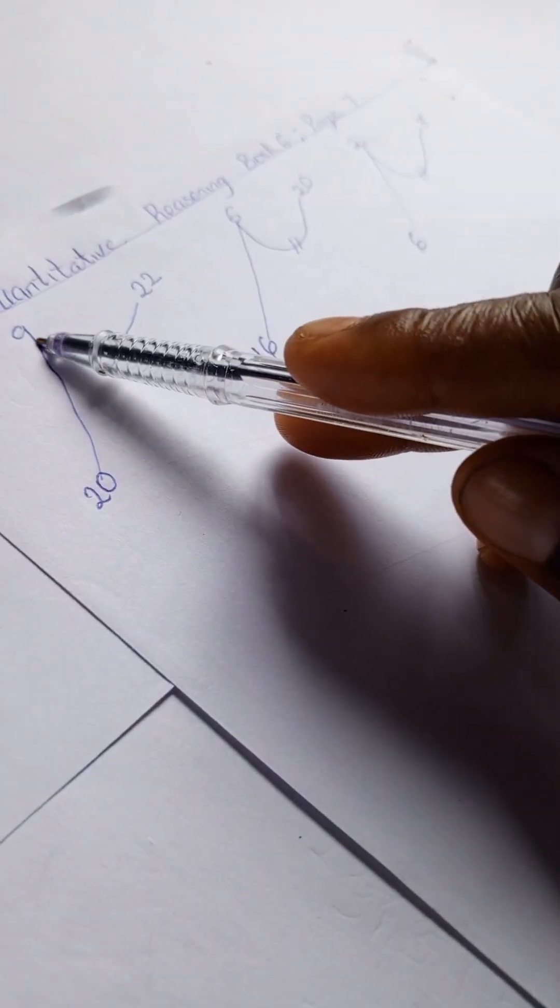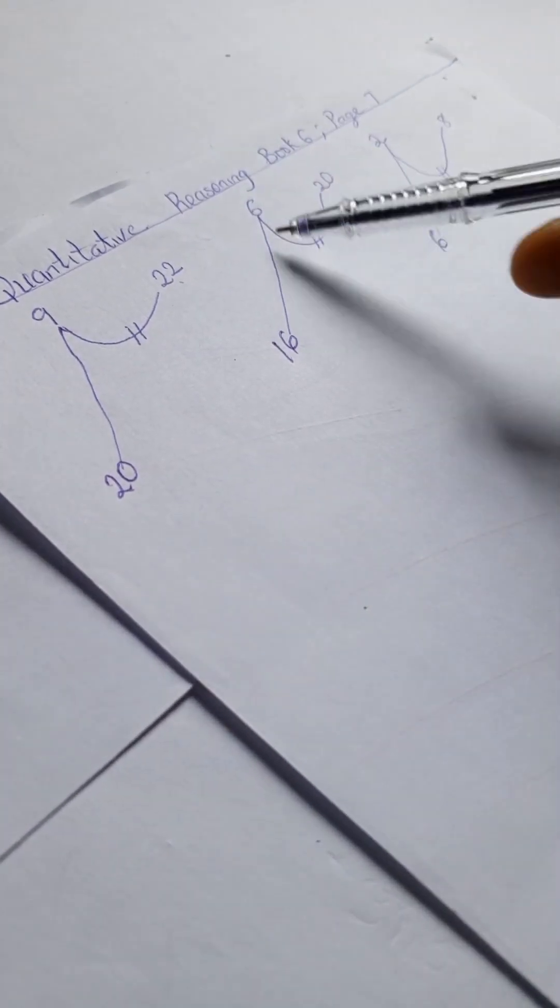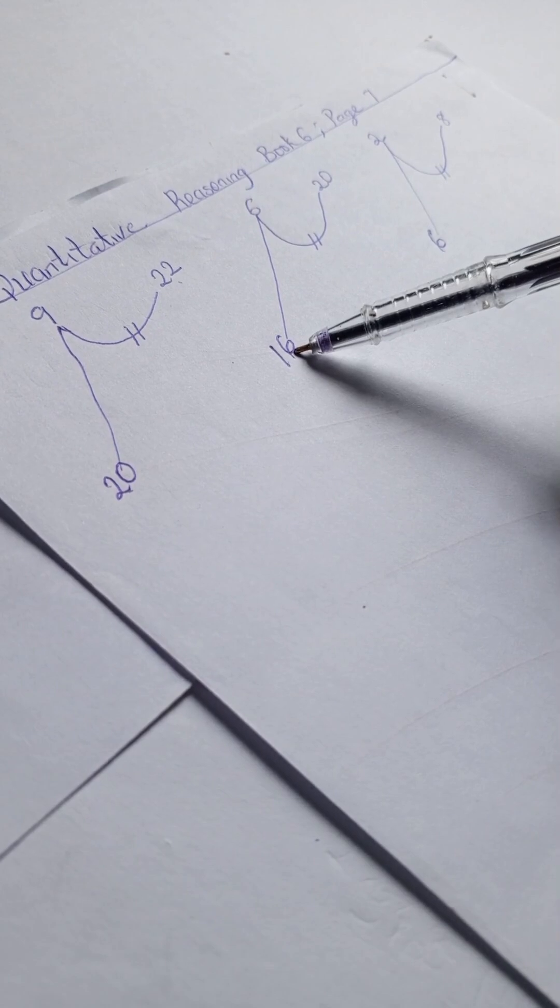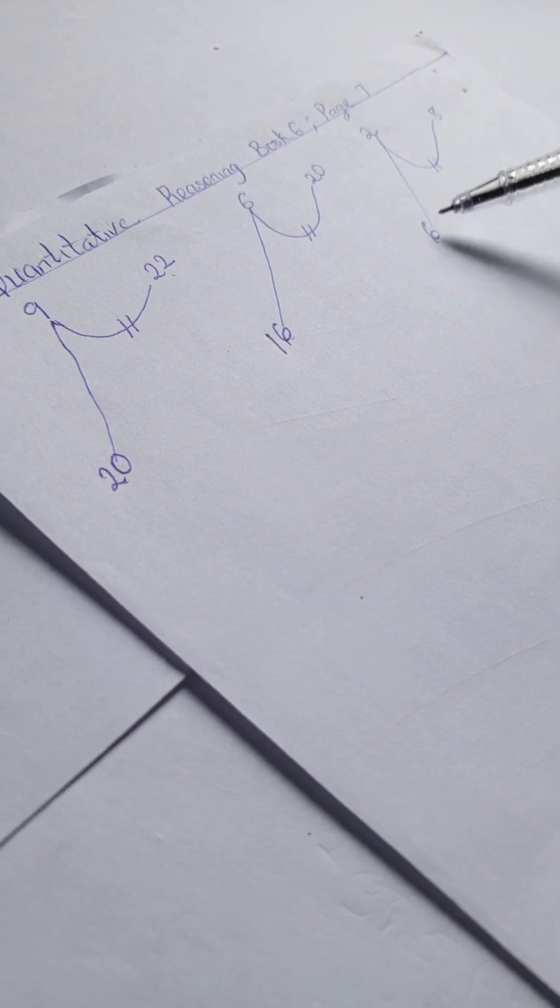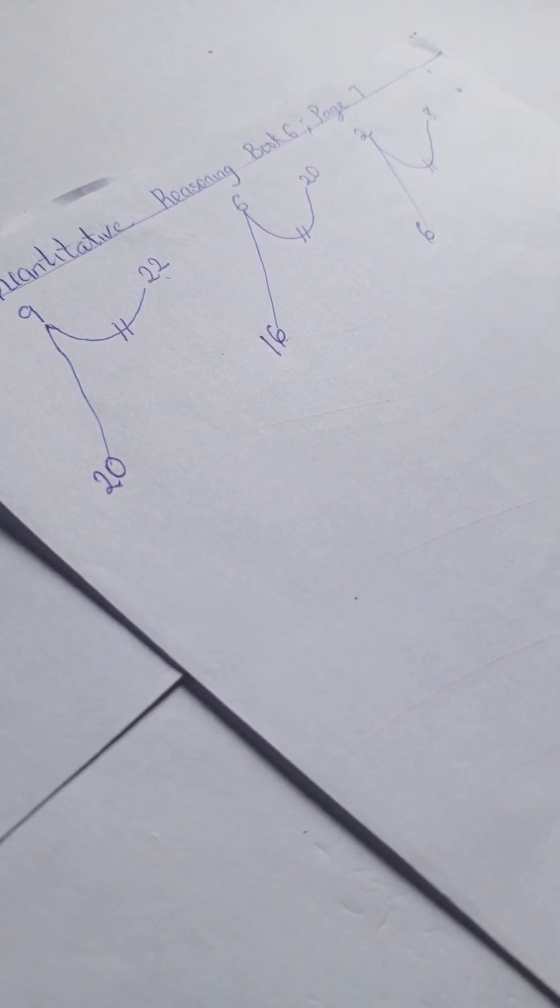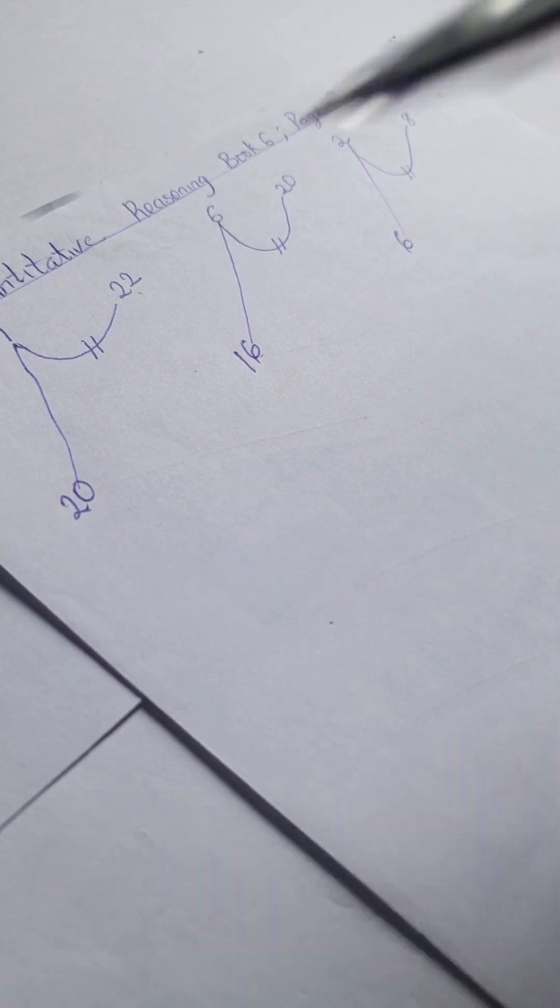We have this example: 9, 20, 22. For this example we have 6, 16, 20. In here we have 2, 6, 8. All right, so don't forget to subscribe. Now let's start with this.